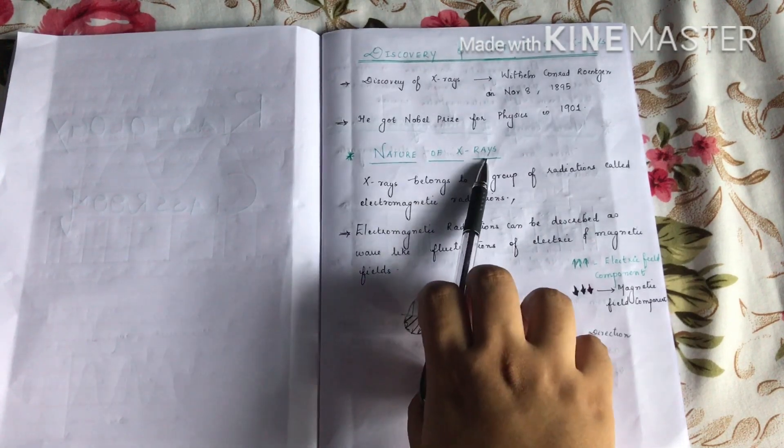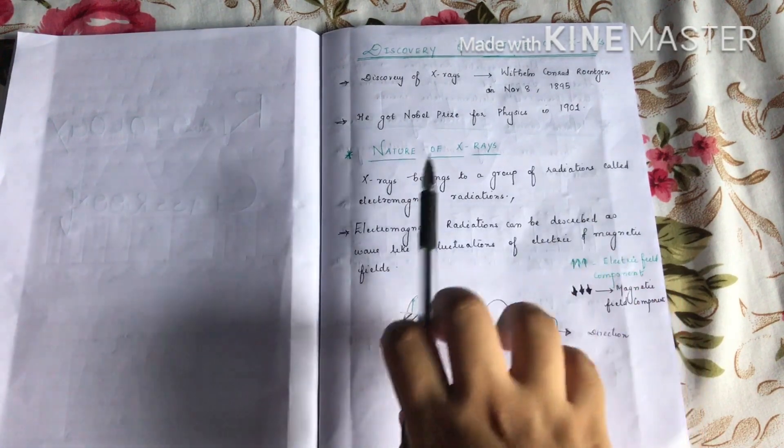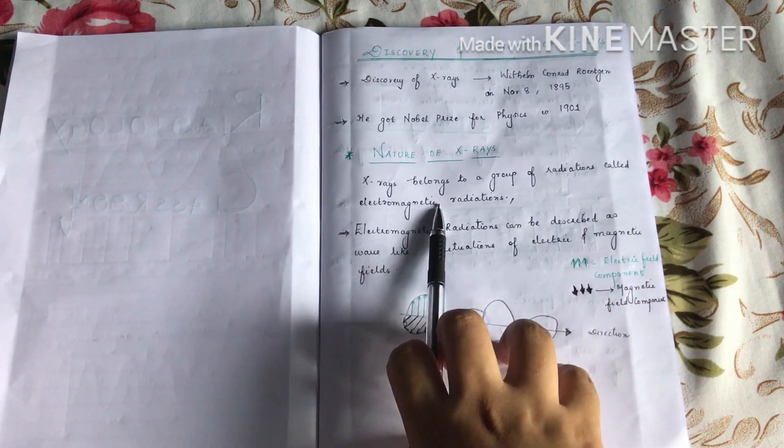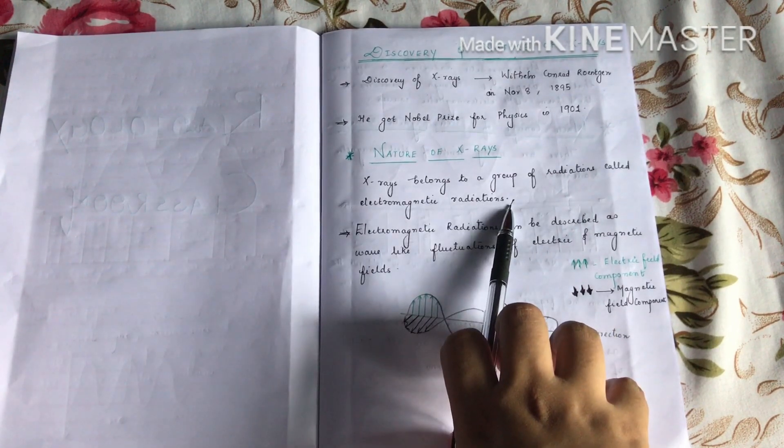Second, about the nature of X-rays. X-rays belong to a group of radiation called electromagnetic radiation. So electromagnetic radiation, in this family, is visible light.